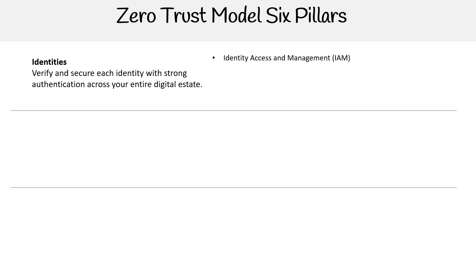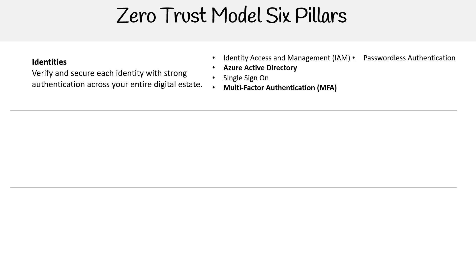The first one is identity access and management, or IAM. The next one is Azure Active Directory, and this one gets a lot of attention due to all its identity and access management capabilities. We have single sign-on, multi-factor authentication or MFA, passwordless authentication which is a subset of MFA, risk-based policies, and we have identity secure score. You'll see a few different types of secure score like Microsoft Secure Score and compliance score in this course, which is very useful throughout Microsoft 365 and Azure.